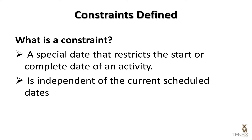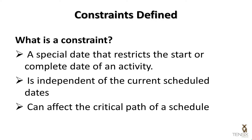You set this date manually to whatever date is required. It can affect the critical path of a schedule, and that is where the concern about constraint usage comes from in most of the guidelines for good scheduling.